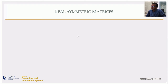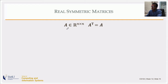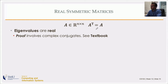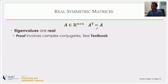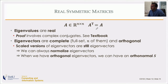Let's start with real symmetric matrices. Real means all the elements of the matrix are real, so we write A is a member of R^(n×n), and symmetric means its transpose is the same as itself: A transpose equals A. The moment you have such matrices, the eigenvalues are real. This can be proven fairly easily and is in the textbook. To prove that something is real you have to step into the territory of complex numbers a little bit and deal with complex conjugates.